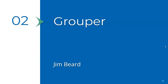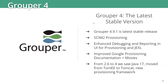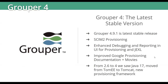Grouper information will be presented by Jim Beer. For Grouper version 4, this is the stable production branch. The latest stable release is 4.9.1. Throughout the lifecycle of version 4 we've seen improvements in SCIM provisioning, enhanced debugging and reporting in the UI for provisioning events and JexEL scripting, and improved documentation for the Google provisioners including videos on YouTube by Chris Heiser. As a reminder, moving from 2.6 to 4 brought Java 17 replacing Java 8, Tomcat replacing Tommi, and a new provisioner framework.